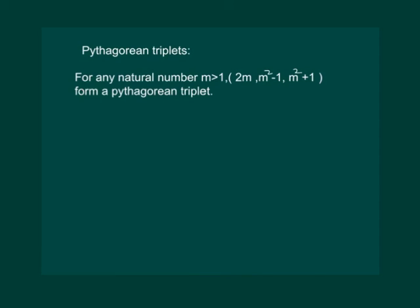Hence we define that for any natural number m which is greater than 1, 2m, m square minus 1 and m square plus 1 form a Pythagorean triplet. And for this triplet, 2m whole square plus m square minus 1 whole square should be equal to m square plus 1 whole square.